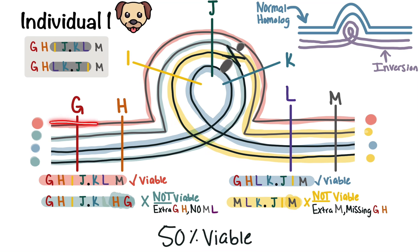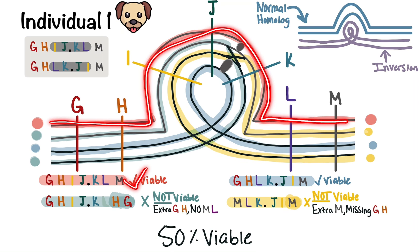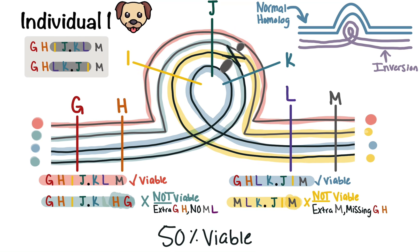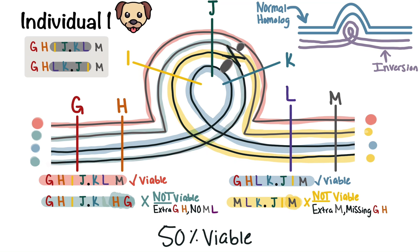If we follow the red chromosome, we can tell that it's going to be viable because it has all portions of a chromosome, it has a centromere, and it doesn't have any deleted portions of a chromosome. If we look at the green one, it crosses over between J and K, and it's not going to be viable because it has an extra G and H, and it's missing L and M.